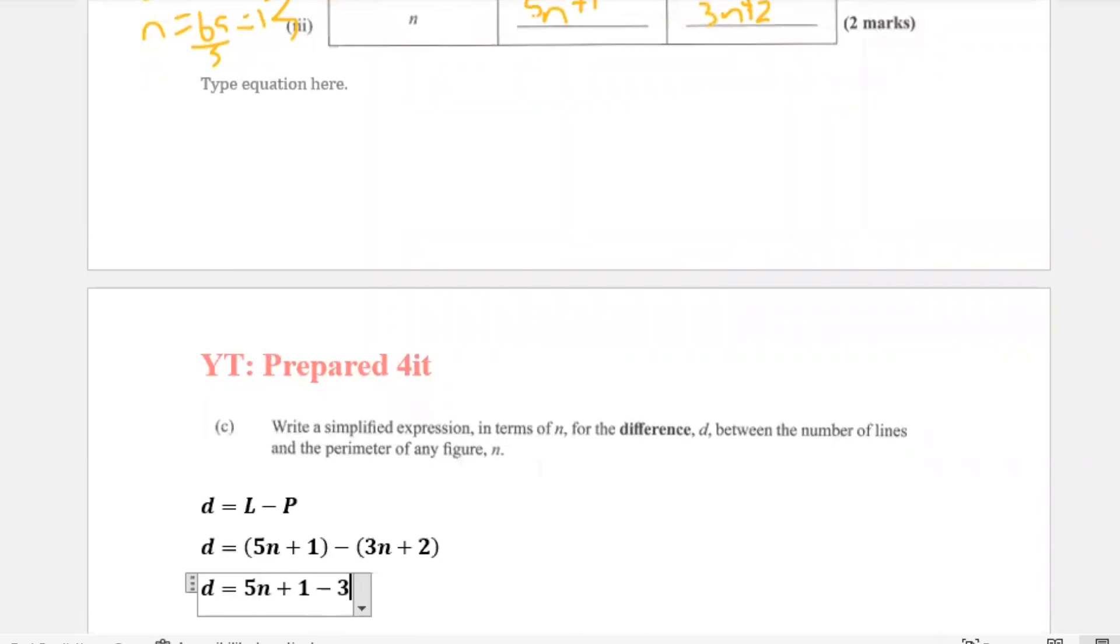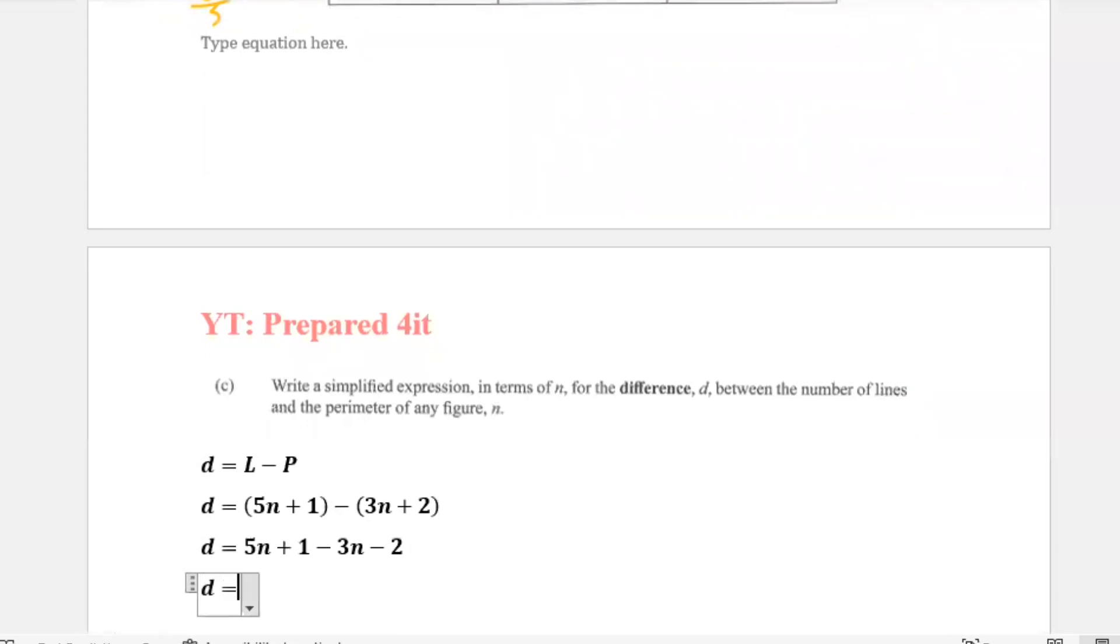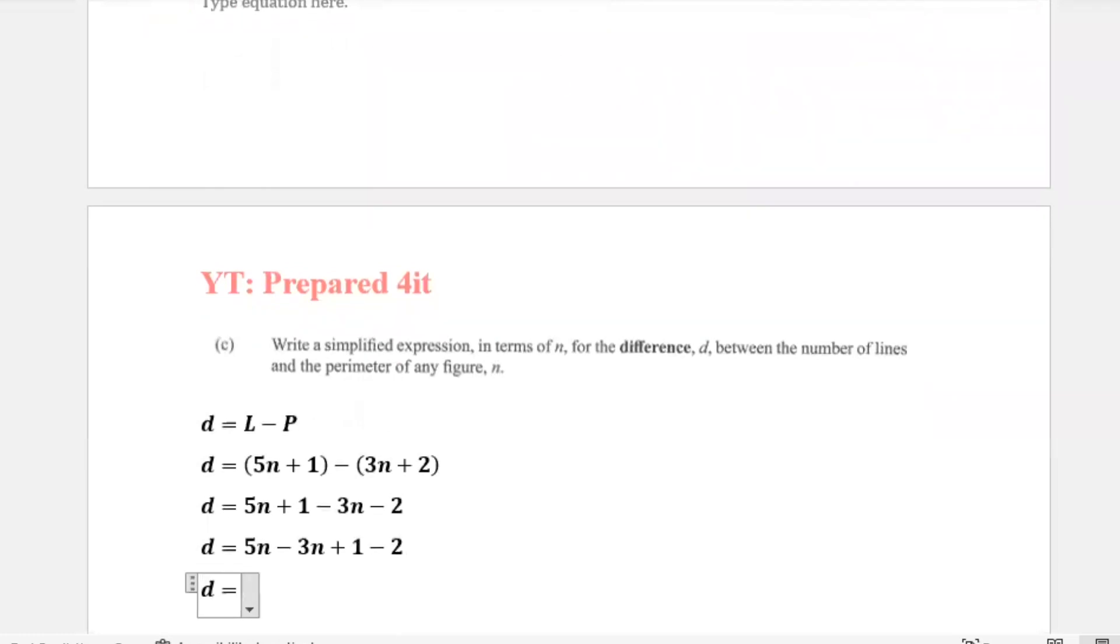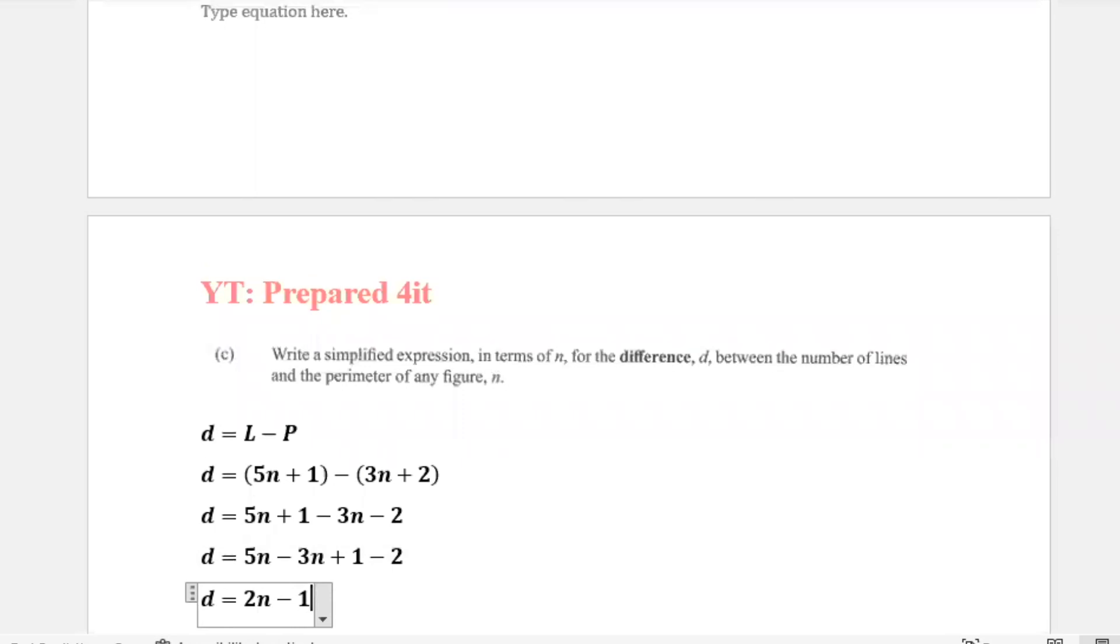So what this would give us is D equals 5n plus 1 minus 3n minus 2. And now you can solve, so D equals 5n minus 3n plus 1 minus 2. Therefore D equals 2n minus 1. They're telling us that the relationship between the number of lines and the perimeter can be found using this formula of 2n minus 1, and we can go up top and check it.